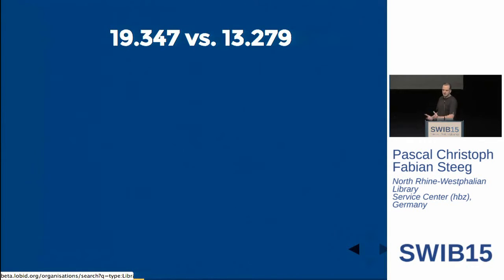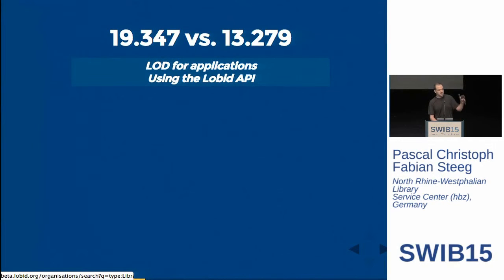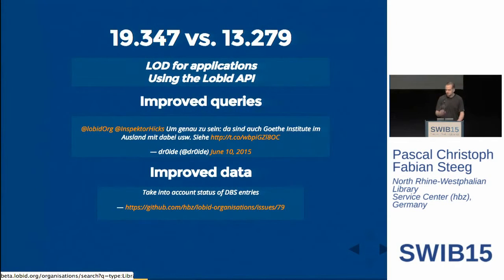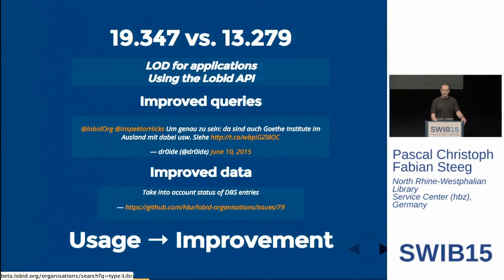As I said before, the initial request came back at about 20,000. What about that? Using LOD for applications via the Lobbit API, we were able to improve the query. In the initial query, we didn't consider the location, because all our organizations in this API are German organizations, but they are not all inside of Germany — like Goethe Institutes. We were also able to improve our data. Because if your result is double the common answer, the sanity check makes you realize we were taking into account inactive libraries. So we really see that usage leads to improvement.